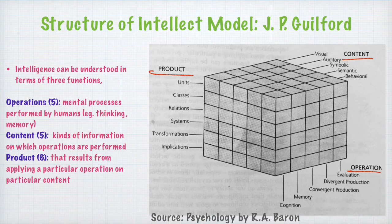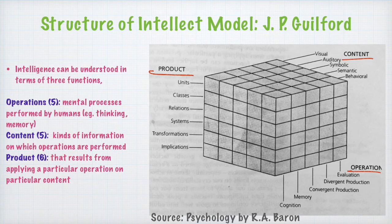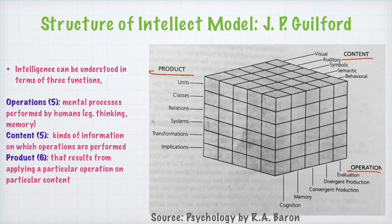When we apply operations on different kinds of contents available in the environment, what we arrive at is the product. The product can be in the form of units, classes, relations, systems, transformations, or implications. Units are wholes. Classes are groupings or classifications. Relations are the interrelatedness or interconnectedness of different units of information. Systems refer to various units working together in a coordinated manner. Transformations refer to changing information into new forms. Implications refer to the conclusions that can be drawn from information.